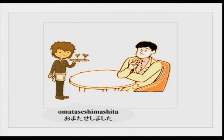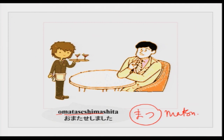Omatase shimashita — o is again honorific, and matase shimashita comes from the verb matsu which means to wait. So sorry to have kept you waiting, I apologize for taking so long — that is what this phrase means. The intonation is always rising with these restaurant phrases. The person will put everything in front of you and say omatase shimashita.